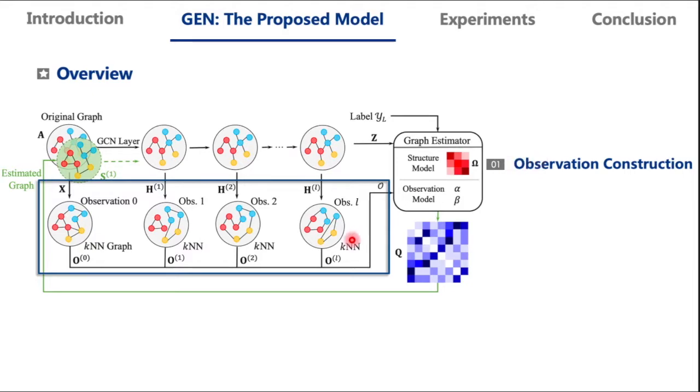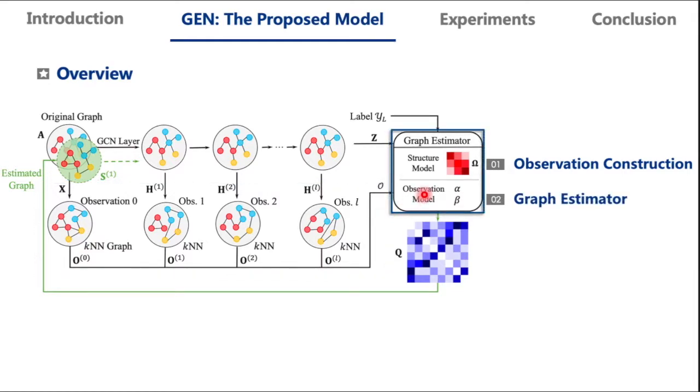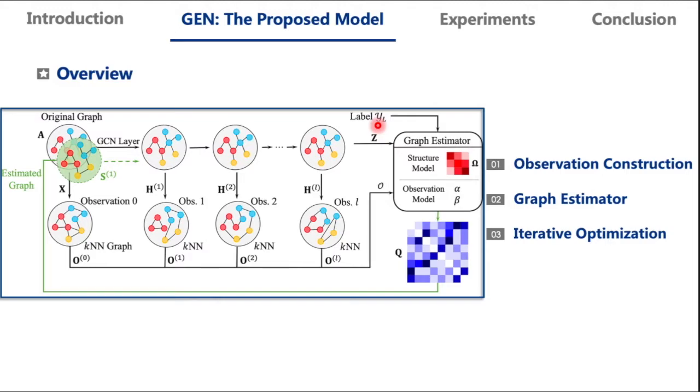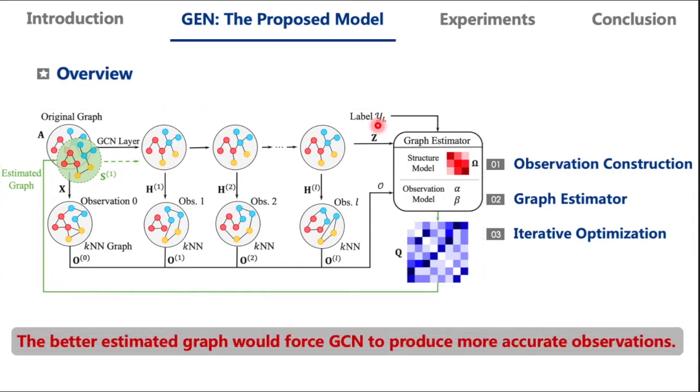We firstly utilize available information to construct an observation set O for the optimal graph. Then propose graph estimator to estimate the graphs based on these observations and labels. Finally, the entire framework is implemented by iterative optimization between GCN parameters and graph estimation. The better estimated graph would then force GCN to produce more accurate observations, and the process is repeated. During such iteration, the learning of GCN and the inference of graph structure enhance each other.